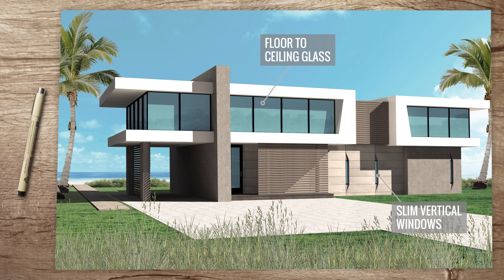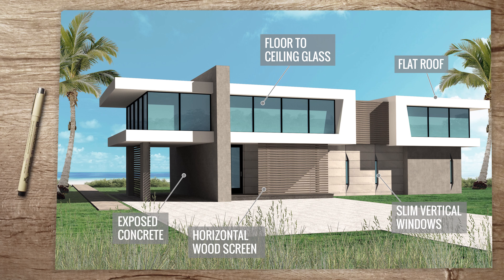When you have a house on the water like this, you really want to capture the views as much as you can. I have a horizontal wood screen on the front porch to create some shading. A flat roof is almost a given in any modern design.